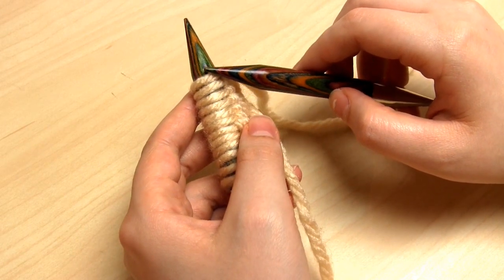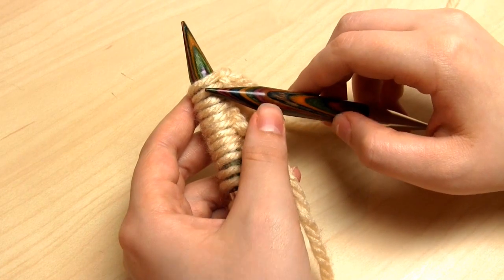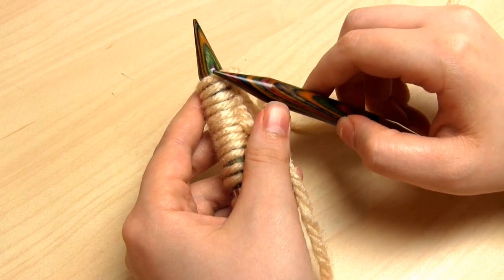The basket weave is an 8 row repeat, but don't let that put you off. The pattern for all of the rows is very simple and I will be walking you through each one.